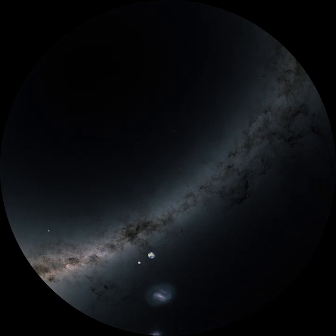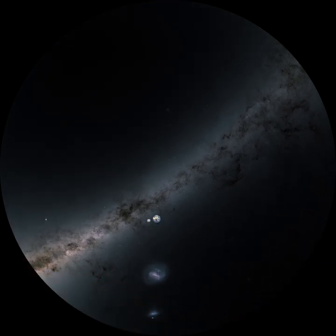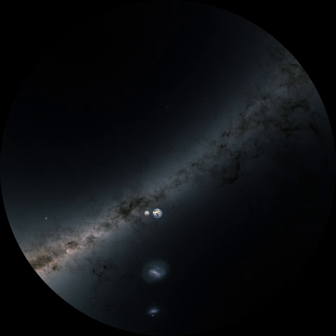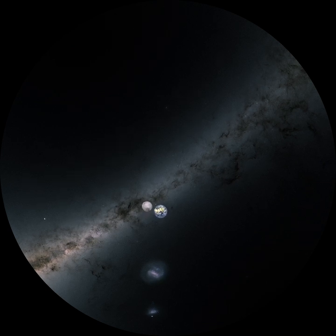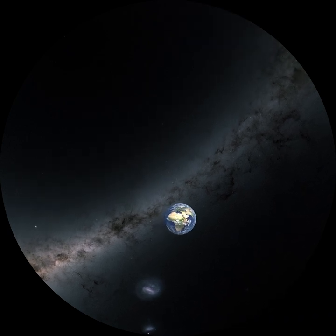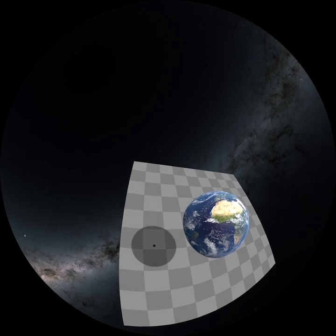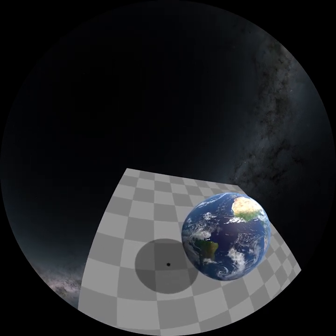Starlight passing the Sun before reaching Earth will follow a slightly curved path. Unfortunately, the Sun will be much brighter, drowning out the starlight unless the Moon is in the way. When the Moon's shadow falls on a location on Earth, there is a solar eclipse.